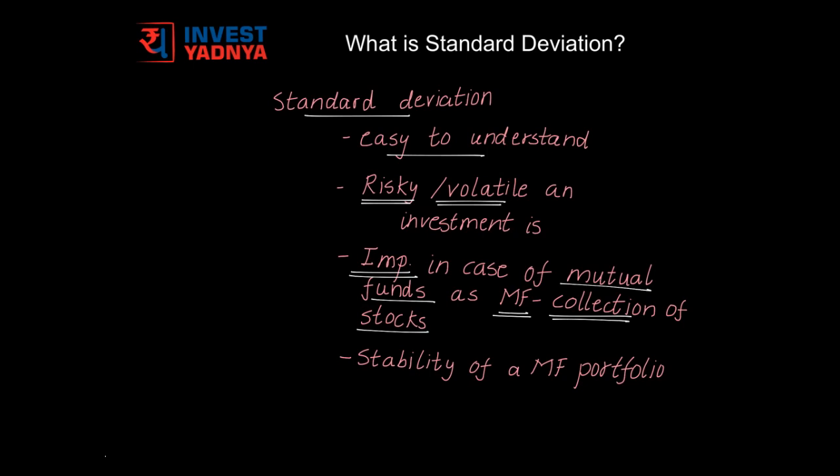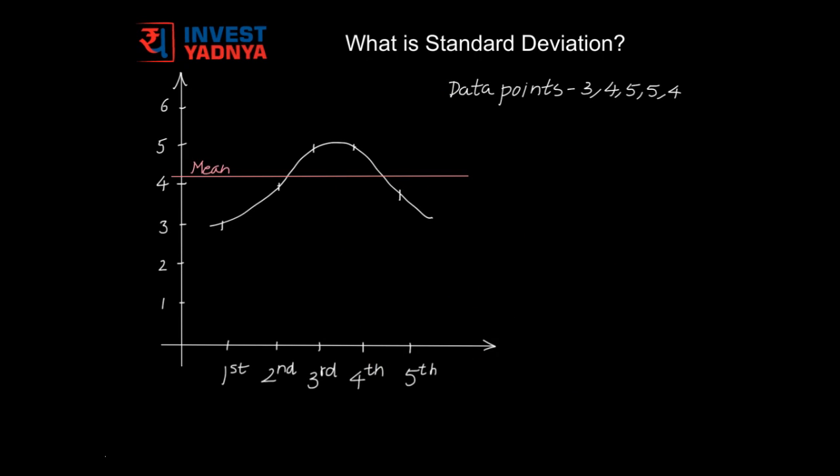Standard Deviation here would indicate the stability of a mutual fund portfolio. Let us understand Standard Deviation with the help of an example. If I want to plot a certain set of data points on a graph, the values of which are 3, 4, 5, 5, and 4, it will look something like this.